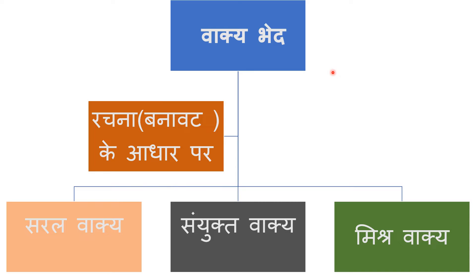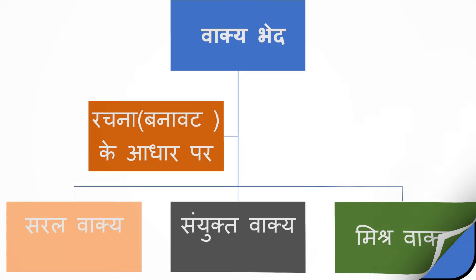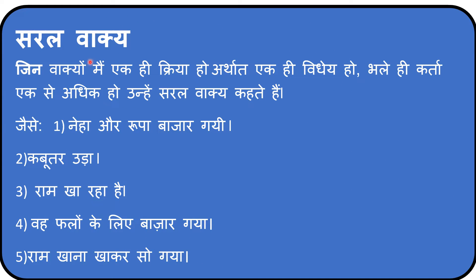Now, these are different kinds of sentences based upon their composition or formation. Saral vaakya — what we call simple sentences in English. Sanyukt vaakya — compound sentences. And mishra or mishrit vaakya — the complex sentences. Let's learn about each of these types and how to transform one type into the other.